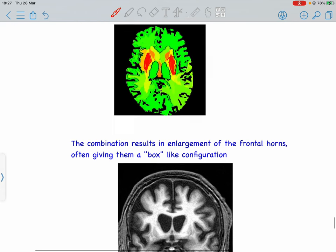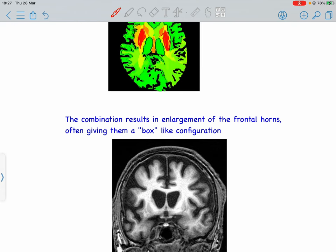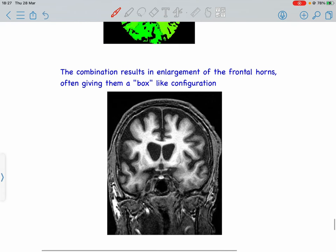These both findings—the caudate nucleus atrophy and the putaminal volume loss—lead to enlargement of the frontal horns, giving them a box-like configuration. We can see it basically has a box-like appearance.